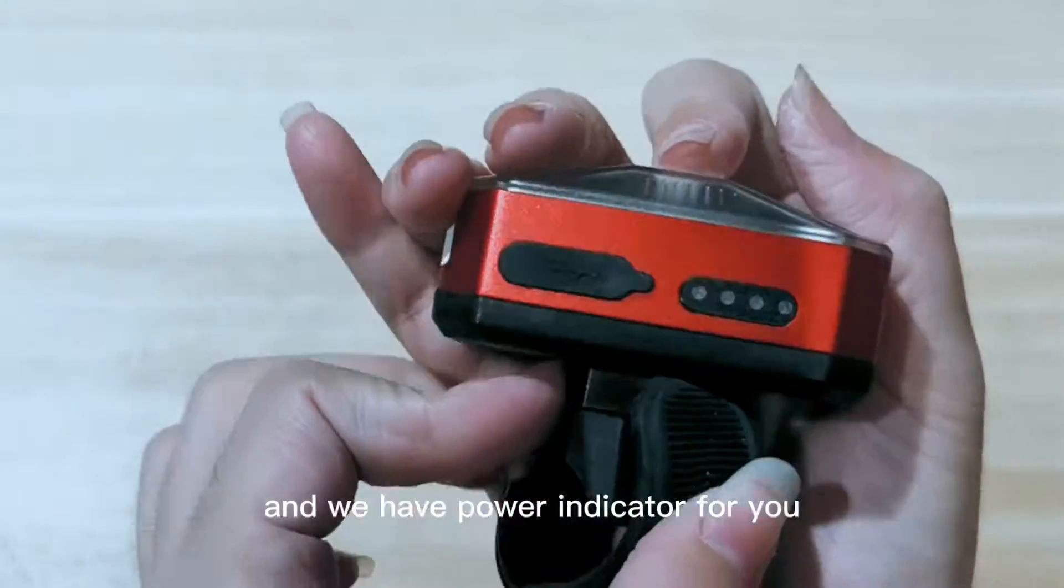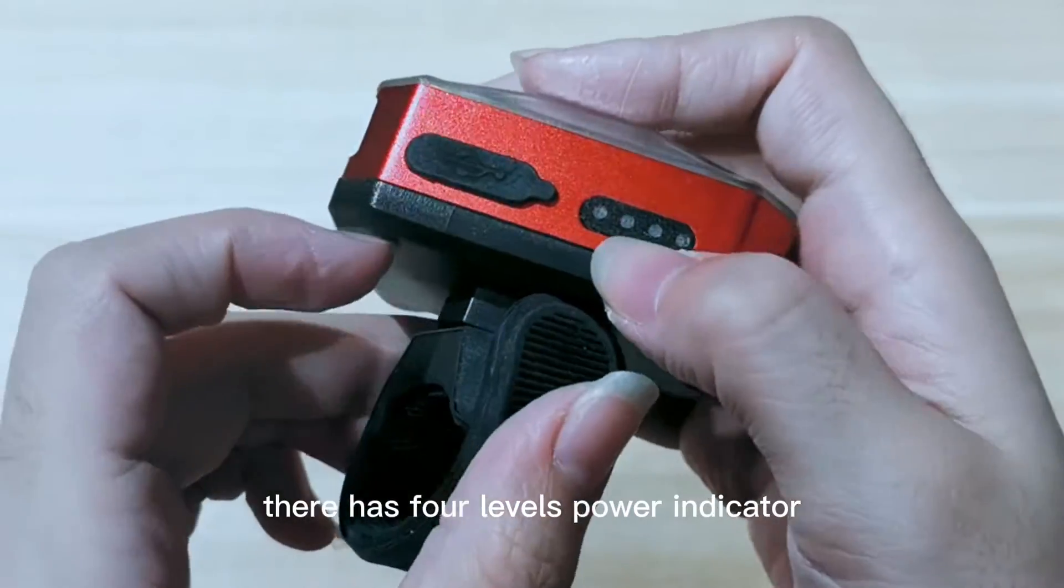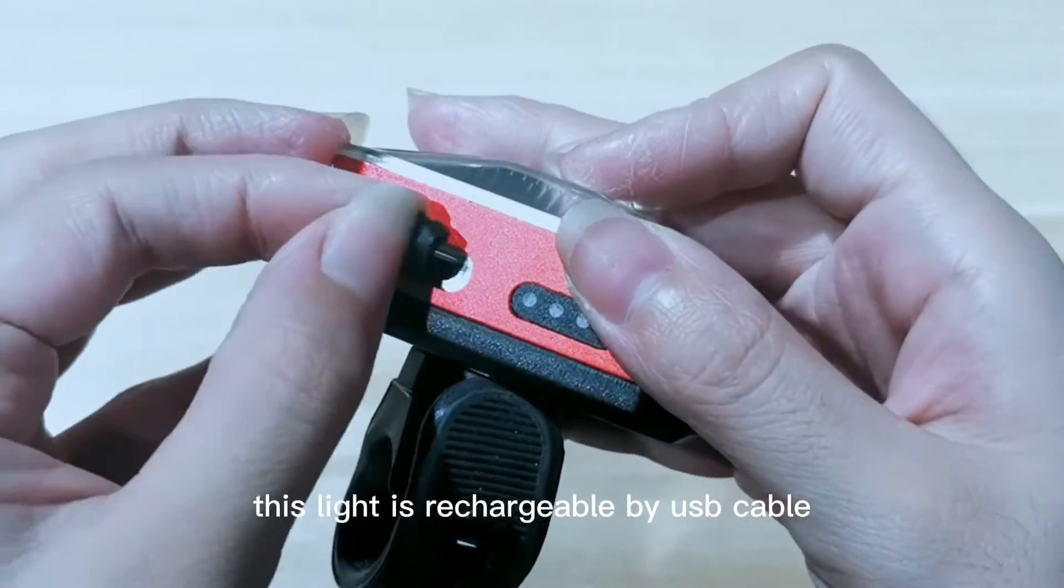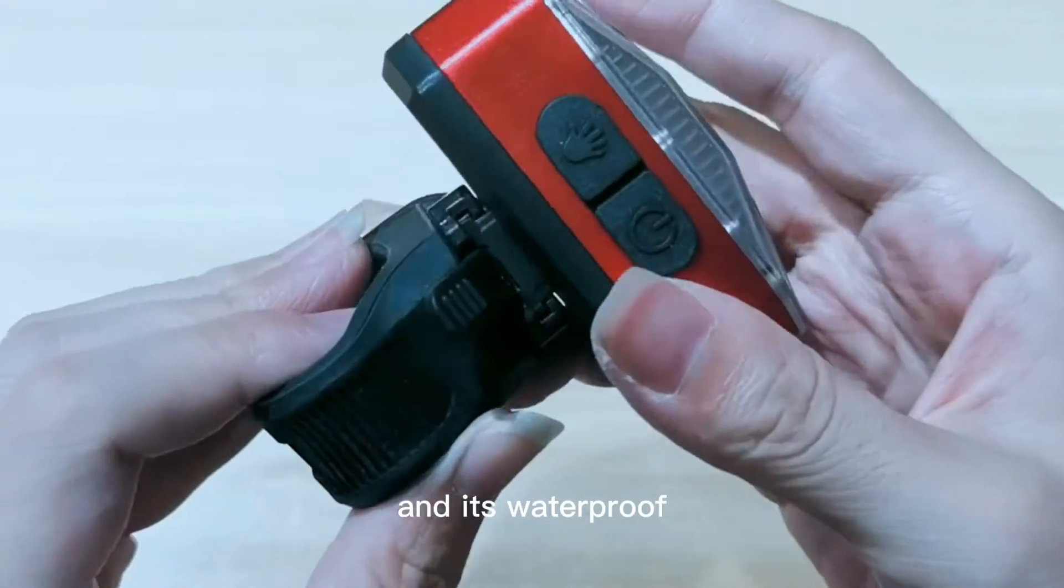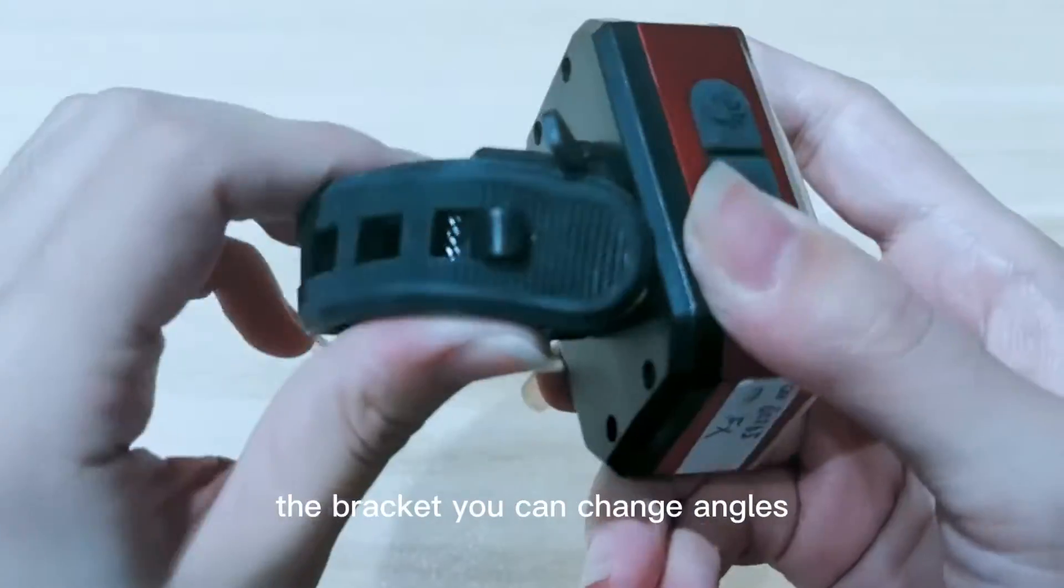We have a power indicator for you. There are four levels on the power indicator. This light is recharged by USB cable and it's waterproof. With the bracket, you can change angles.